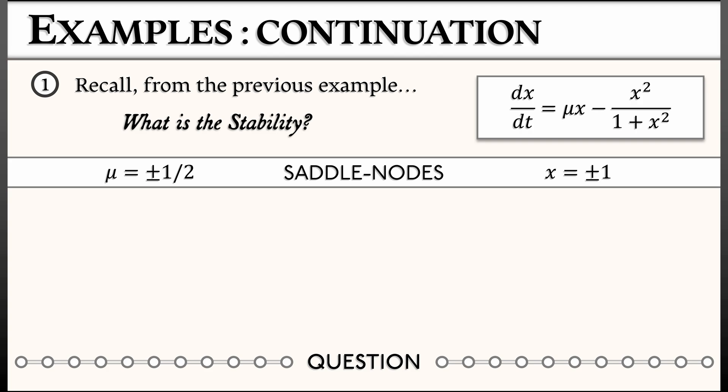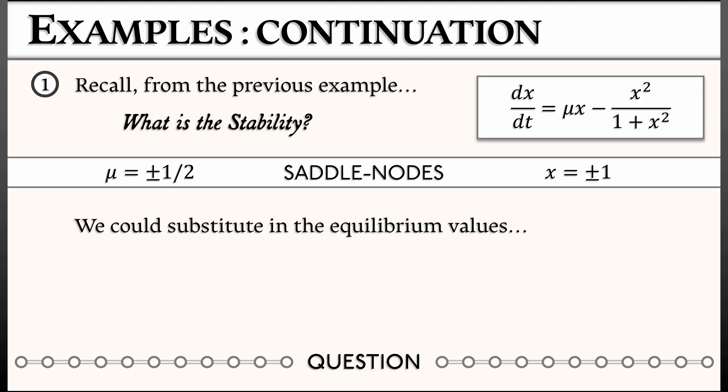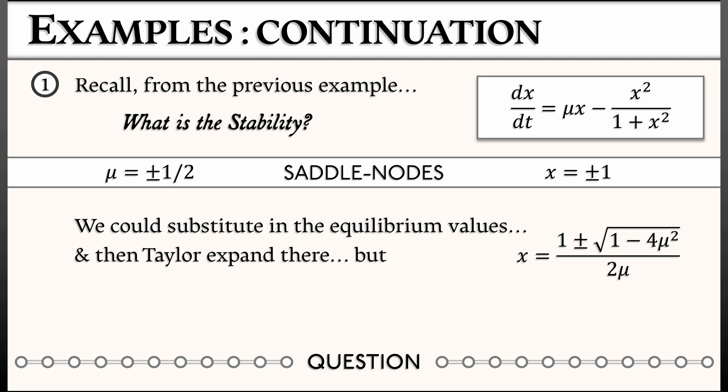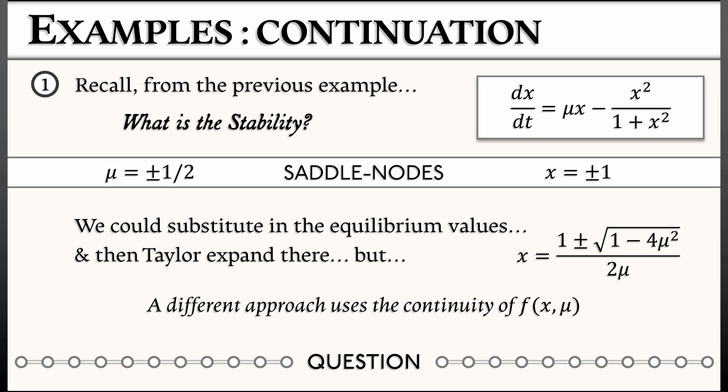How are we going to figure that out? We know how to do this — you just take the equilibrium values and substitute them into the derivative of the right-hand side. But if you take the derivative of mu*x minus x-squared over 1 plus x-squared and then substitute in x equals 1 plus or minus root(1 minus 4*mu-squared) all over 2*mu — I don't think you want to do that. I don't think I can do that without a whole lot of pain. So let's look at a different method.